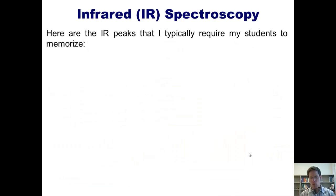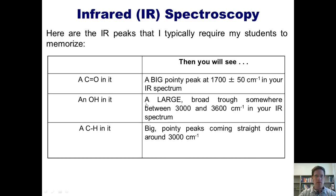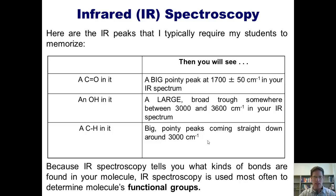Here are the IR peaks that I typically require my second year organic chemistry students to memorize. First, if your compound has a carbon-oxygen double bond in it, which is called a carbonyl, then you'll see a big, pointy peak coming down around 1700 plus or minus 50 in your IR spectrum. If your compound has an OH in it, then you'll see a large broad trough somewhere between 3000 and 3600. And if your compound has a CH in it, which all organic compounds will, then you'll see big pointy peaks coming straight down around 3000. Because IR spectroscopy tells you what kinds of bonds are found in your molecule, IR spectroscopy is most often used to determine a molecule's functional groups. I'm begging you to remember that, because that sentence is frequently placed in different formats into standardized exam questions.